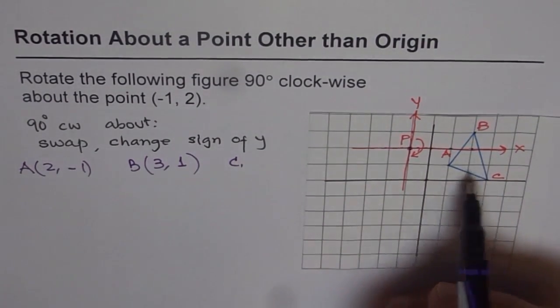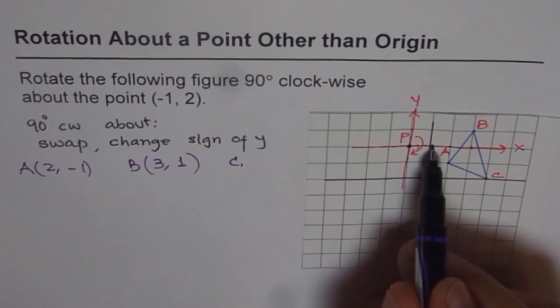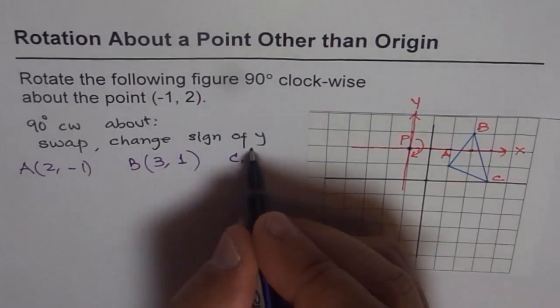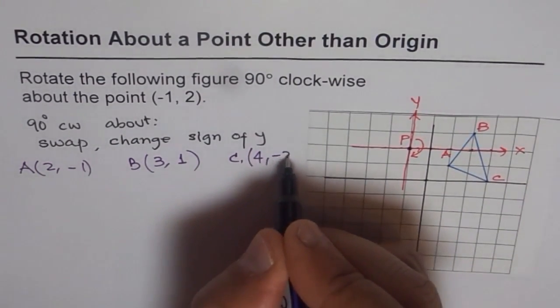To reach C from P, we have to go 1, 2, 3, 4 right and 2 down. So that means 4 and minus 2, correct?